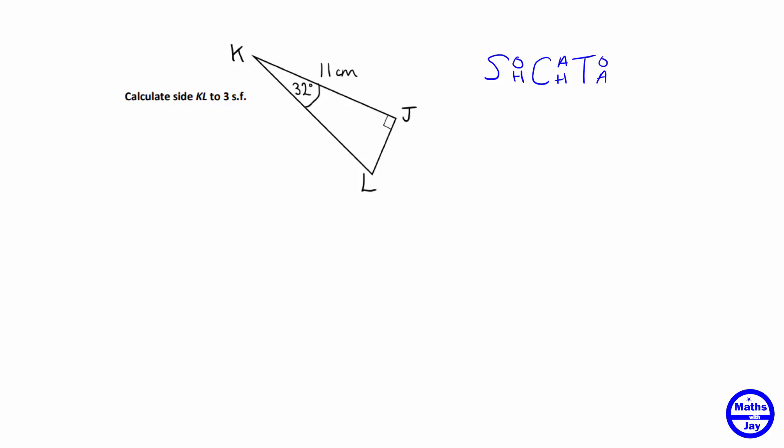And then we'll label the sides that we've got. Now the longest side, the one opposite the right angle, is the hypotenuse.